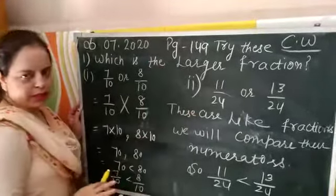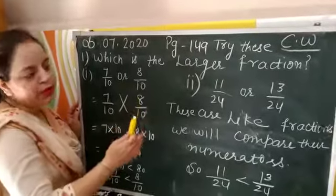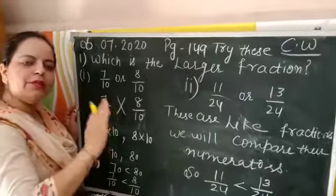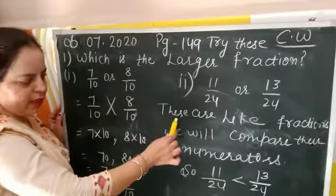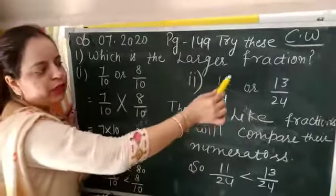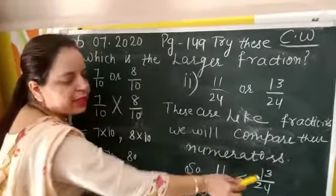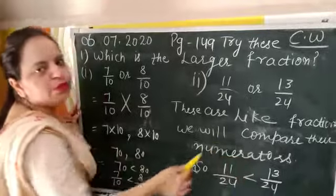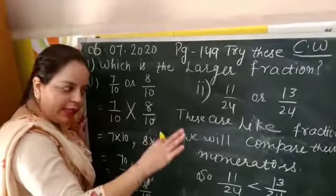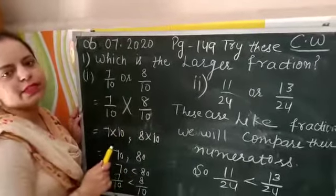Since the denominators are equal and numerators are different, we compare the numerators: 11 and 13. We know 13 is the larger number, so 11 by 24 is less than 13 by 24, meaning 13 by 24 is the larger fraction. When like fractions are given, we simply compare their numerators to determine which is larger or smaller.